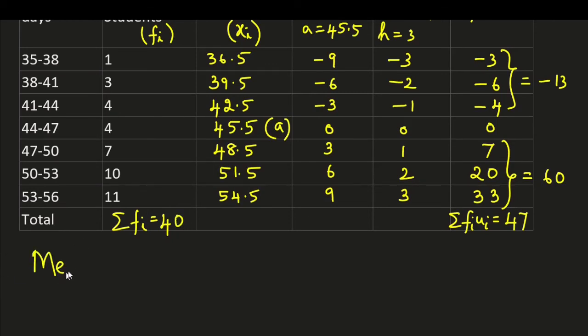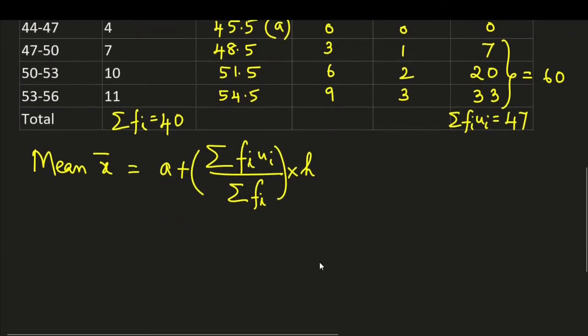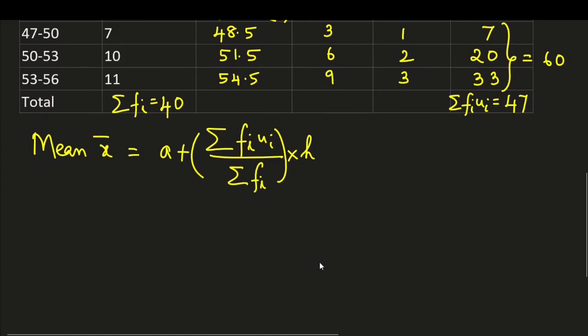The formula for mean is mean x bar is equal to a plus sigma fi ui by sigma fi into h. Let us substitute the values. So here we get 45.5 plus, a here is 45.5 plus sigma fi ui is 47.